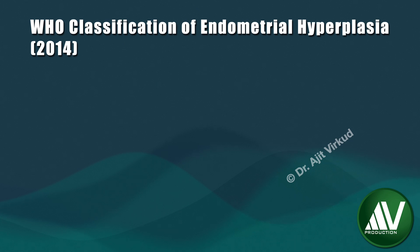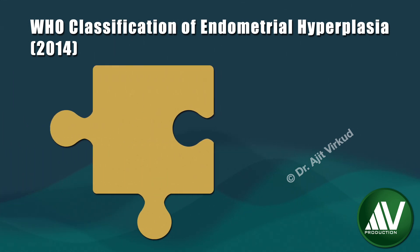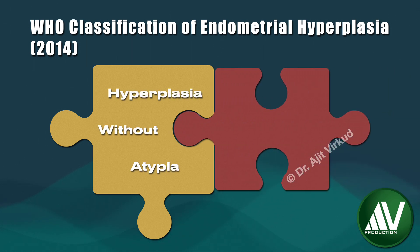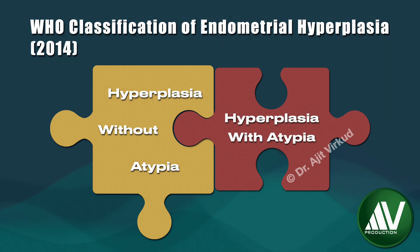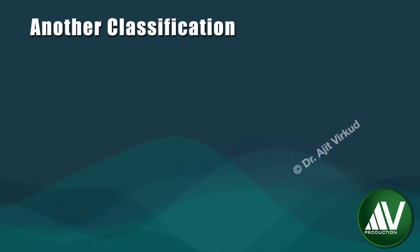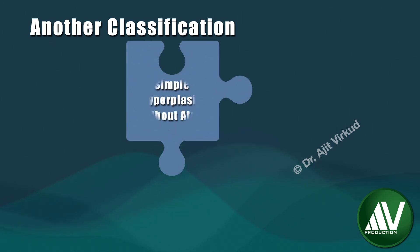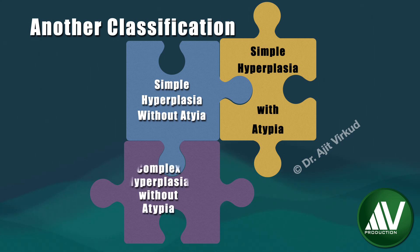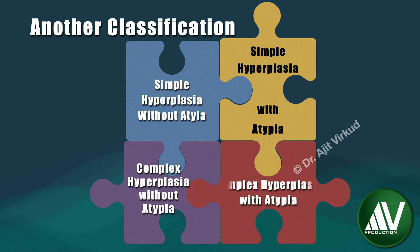The revised 2014 WHO classification is recommended. This separates endometrial hyperplasia into two groups based upon the presence of nuclear atypia: hyperplasia without atypia, also known as typical hyperplasia, and hyperplasia with atypia. There is another classification which is more complex and not widely used. It divides patients into four groups: simple hyperplasia without atypia (cystic endometrial hyperplasia), simple hyperplasia with atypia, complex hyperplasia without atypia, and complex hyperplasia with atypia.